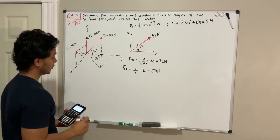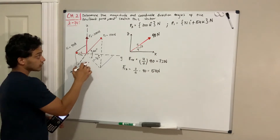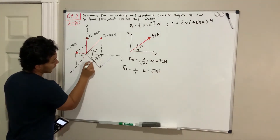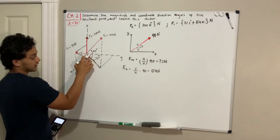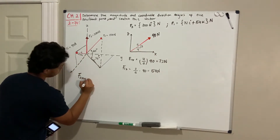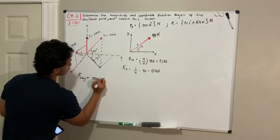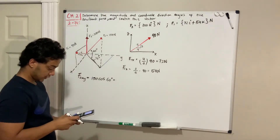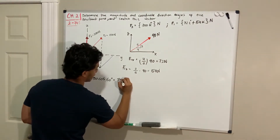Now the last one is F2, which is a little more complicated. We're going to find the magnitude of F2 projected onto the XY plane. That projection equals the full magnitude of 150 multiplied by the cosine of the given angle of 60 degrees, which gives us 75 newtons.